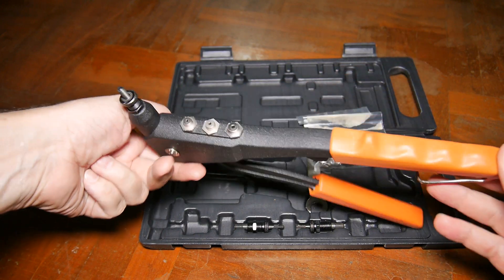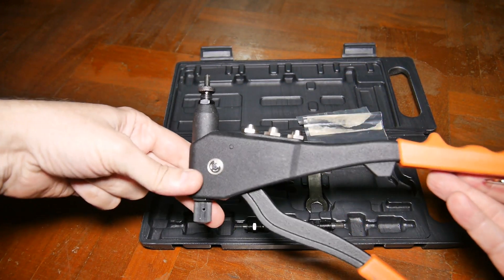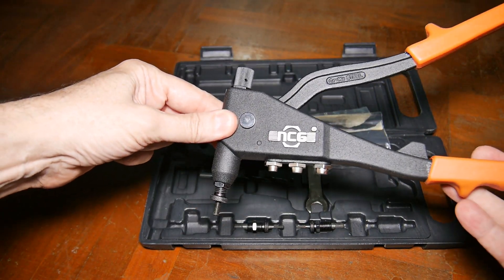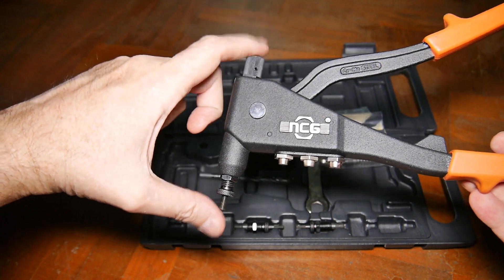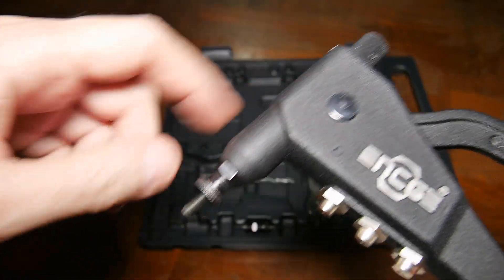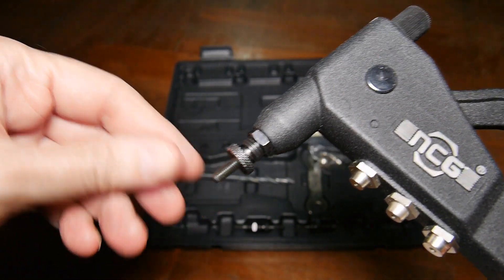This is the tool. It looks an awful lot like a pop rivet gun. In fact, this one can be used as a pop rivet gun if you remove this head off here. But let me do a close up and I'll show you the difference. This piece out here is different. As you can see, this head is different. It has this threaded piece up here.